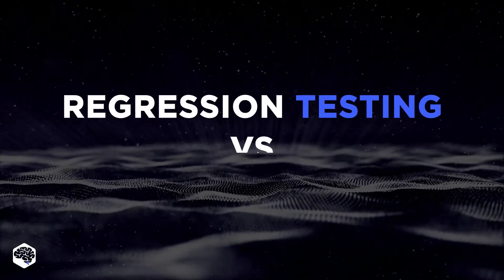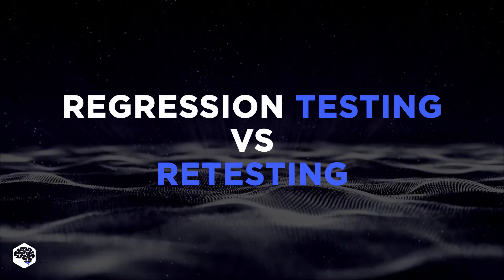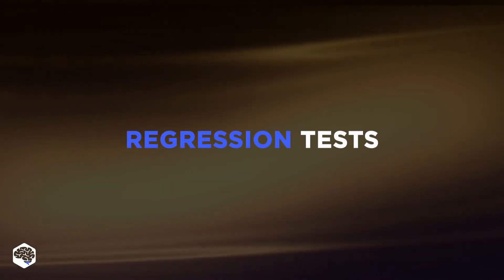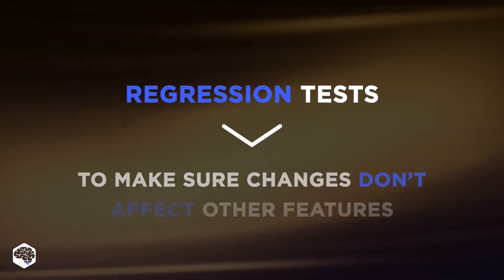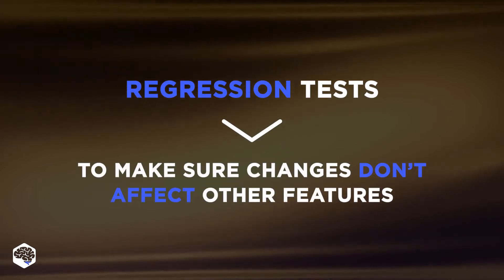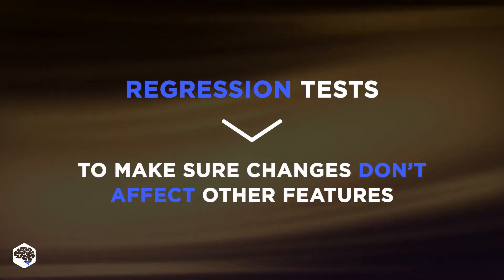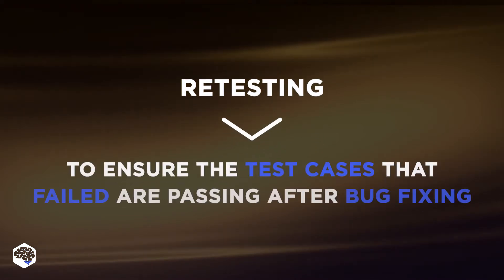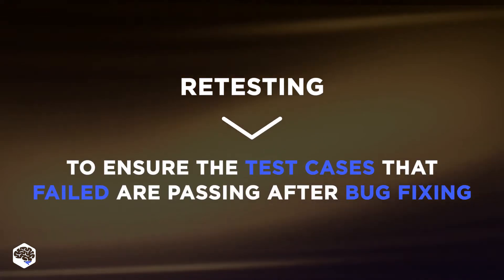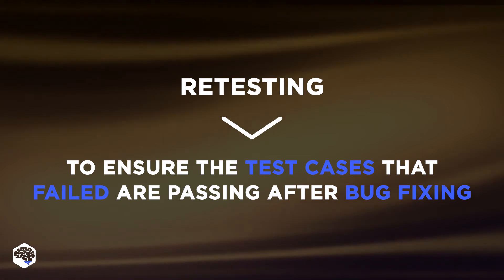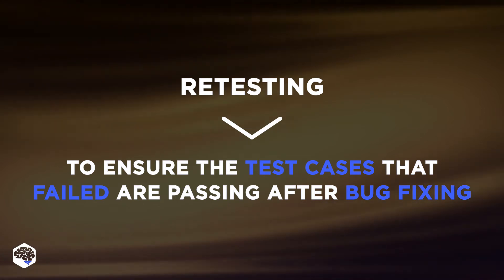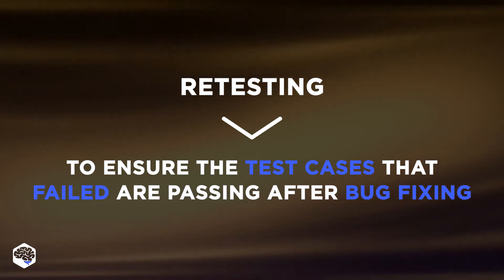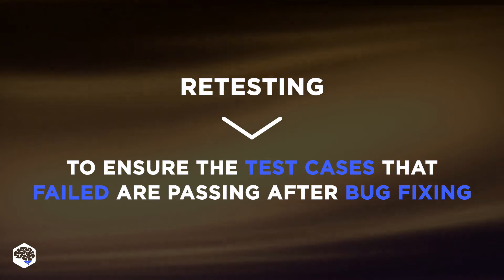What is the difference between regression testing and re-testing? The answer is easy. Regression tests are done after changes are introduced, to make sure these don't affect other features. Retesting, on the other hand, tests a program to ensure that it functions correctly as designed. Retesting is also done to check if the test cases that previously failed will now work after bugs were fixed.